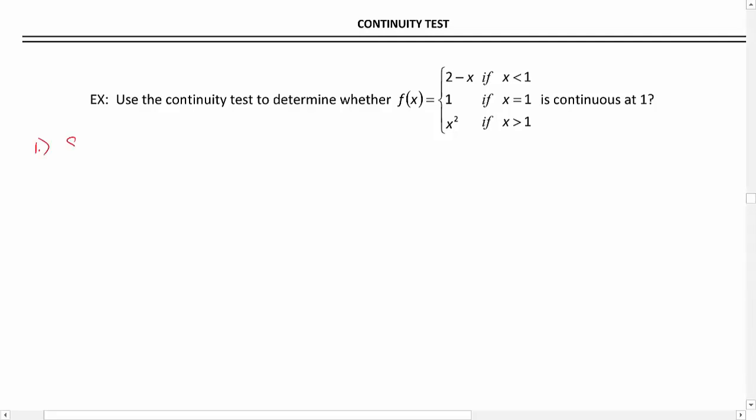So first, we need to show f of 1 exists. So f of 1, let's see which piece we use when x equals 1. We use this one. So f of 1 is equal to 1. All right, it exists.